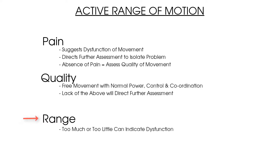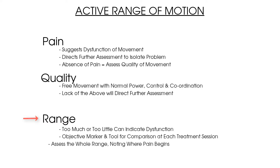In terms of range of movement, too much or too little range can indicate a dysfunction and could help identify the patient's condition. It is important to use range values as objective markers and compare them across treatment sessions. You need to know the range at which pain starts and the range at which movement ends, as these two values are often very different. A lack of range indicates stiffness or weakness preventing full movement.